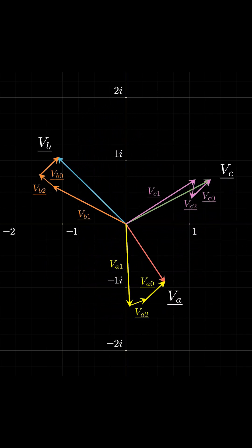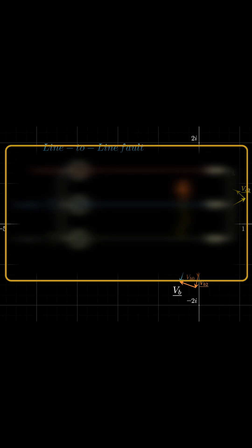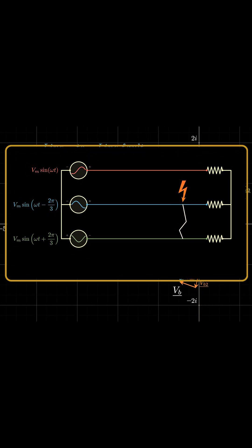Let's then examine a practical case: a line-to-line fault between phases B and C, for example, which is a typical fault that can occur in a three-phase system.